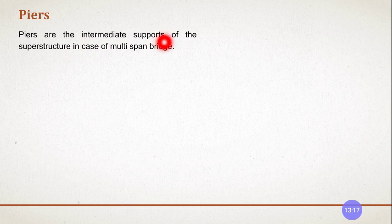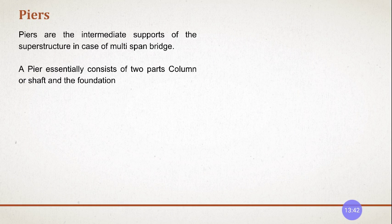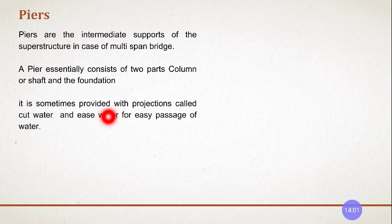Piers are the intermediate supports of the superstructure in the case of multi-span bridges. You can see them only in multi-span bridges — when there are two or more spans, you will see a pier. It is the intermediate support that supports the bridge. A pier usually consists of two parts: a column or a shaft, and a foundation. It is sometimes provided with projections called cutwater and easewater for the easy passage of water.